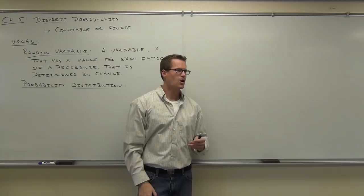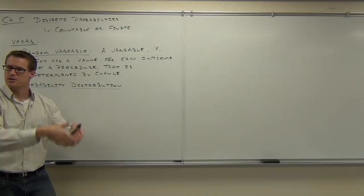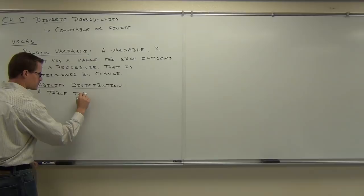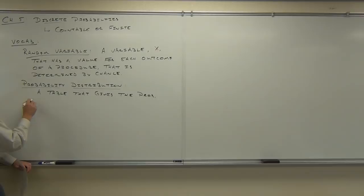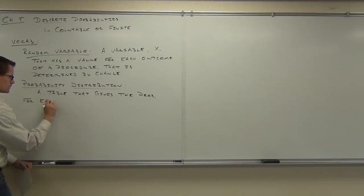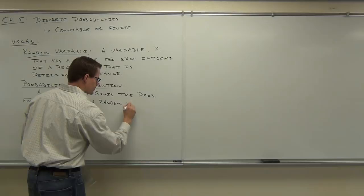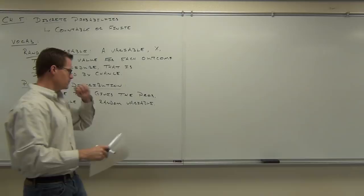A probability distribution looks just like a frequency distribution. We're going to have a table — like a T-chart — with columns. On the left-hand side we'll have the values of our random variable; on the right-hand side we'll have the probabilities. That's a probability distribution. It's a table that gives us the probability for each value of a random variable.